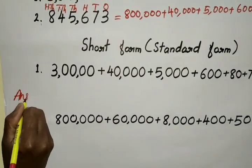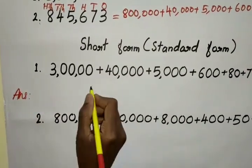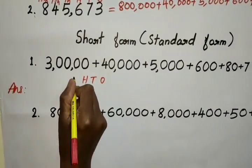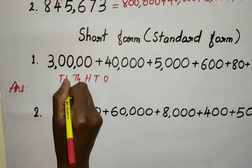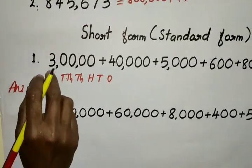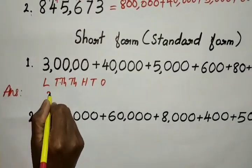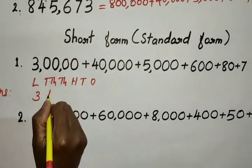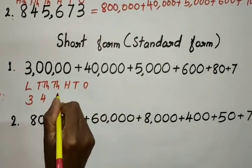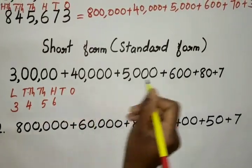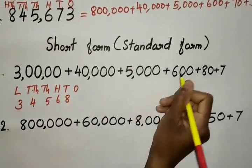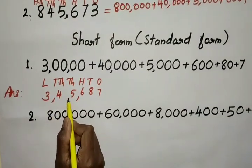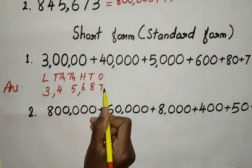So let us write the places first: 1's, 10's, 100's, 1000's, 10,000's, 1,00,000's. How many lakhs is here? 3 is in 1,00,000's; 4 is in 10,000's; 5 is in 1000's; 6 is in 100's; 8 is in 10's; and 7 is in 1's. So the number is 3,45,687.